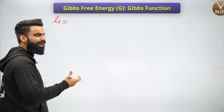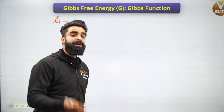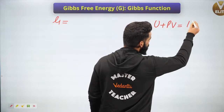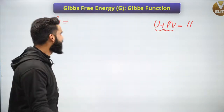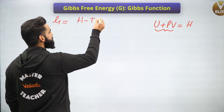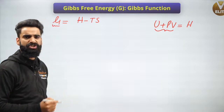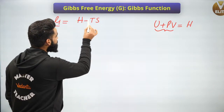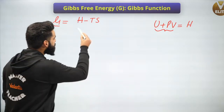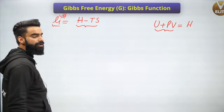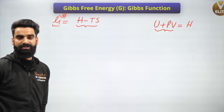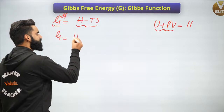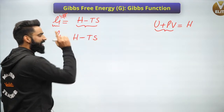So G equals H minus TS, where H is enthalpy, T is temperature, and S is entropy. The first property of Gibbs free energy: it is an extensive property — its value changes on changing the size of the system or the amount of substance. Second, it is a state function. Since it's a state function, we cannot calculate its absolute value; we always calculate the change. A small change is represented by dG, a large change by ΔG equals G_final minus G_initial.